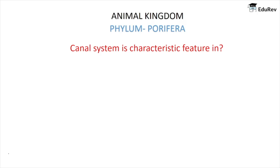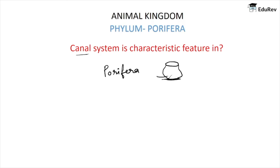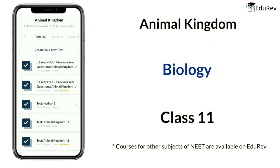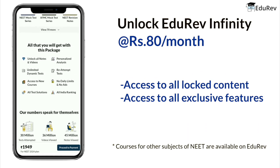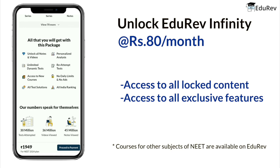Let us end the topic with an important NEET exam question: 'Canal system is a characteristic feature in which phylum?' The answer is Phylum Porifera — the feature of sponges — in which the canal system is present. Water enters from the ostea to the spongocoel and goes out of the osculum. With this, we have come to an end of this phylum. You can go to Edurev and attempt tests to understand this chapter in depth, or unlock all videos with the Edurev Infinity Plan.